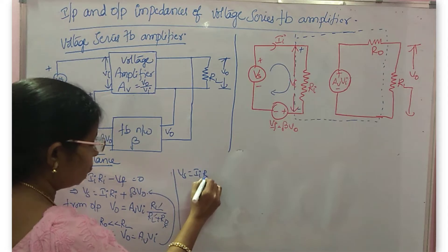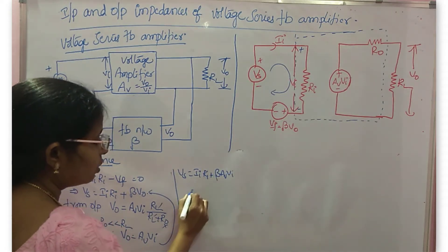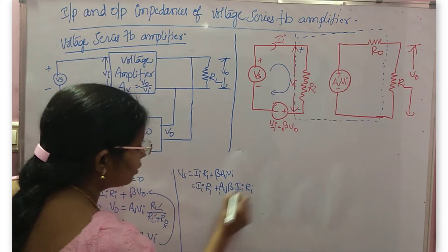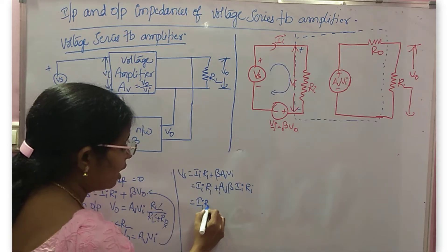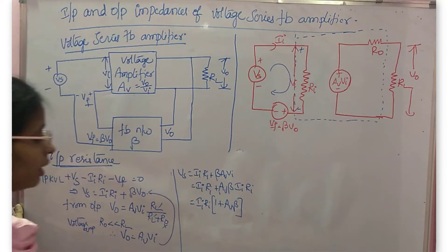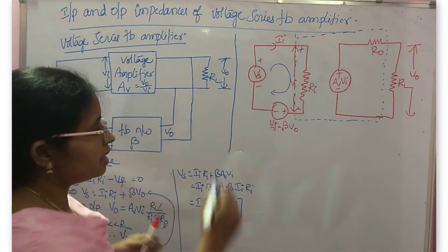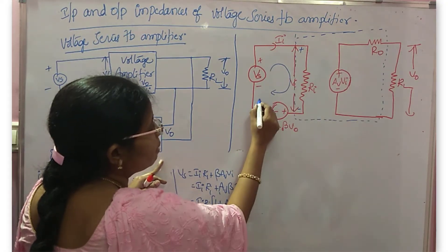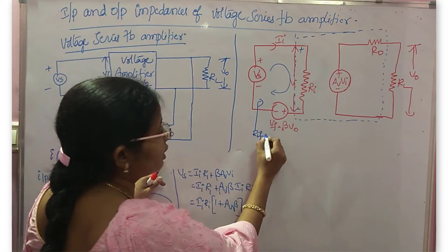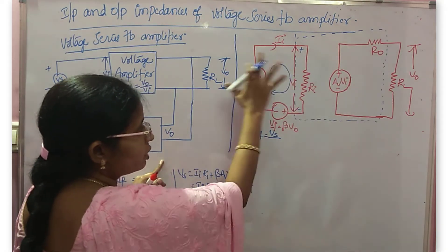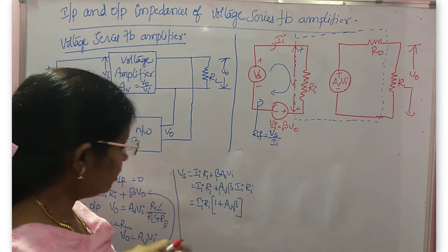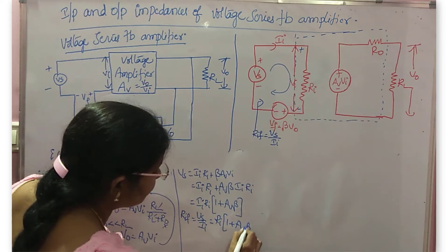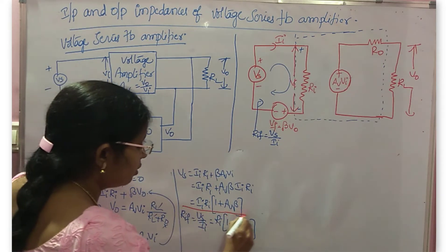Now substitute Av·Vi into the KVL equation. You get Vs equal to Ii·Ri plus beta·Av·Vi, which is Ii·Ri plus beta·Av·Ii·Ri. Take Ii·Ri common, so it is Ii·Ri times (1 plus Av·beta). This Ri is the resistance of your voltage amplifier, and after feedback it becomes the feedback resistance RIF. So RIF equals Vs by Ii, that is Ri times (1 plus Av·beta).